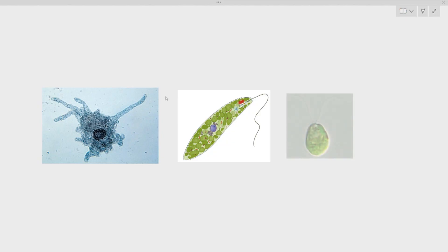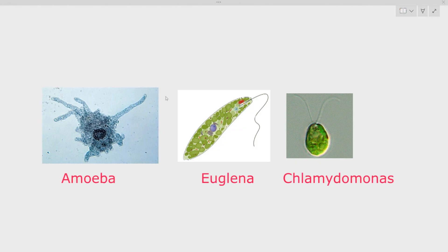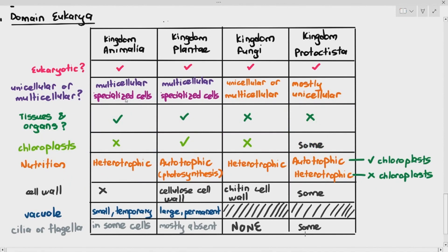Chlamydomonas has two flagella, has a cell wall, and also has chloroplasts, but it is unicellular. So obviously we cannot put it under plants, and we push it into the protoctista kingdom. Organisms under protoctista are further subclassified into protozoa — which are animal-like unicellular organisms — and algae — which are unicellular plant-like cells that behave like plants but cannot be called plants because they are unicellular.